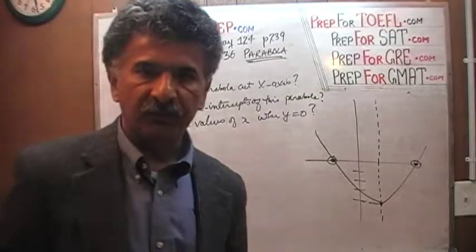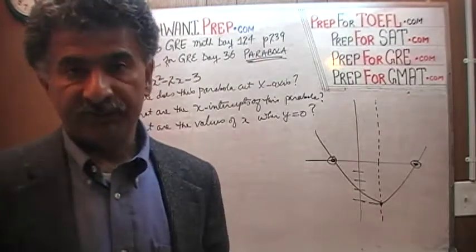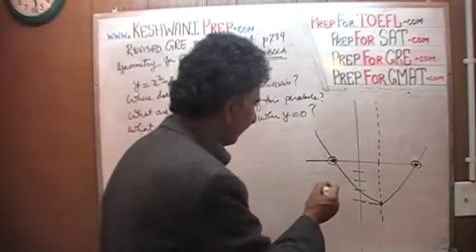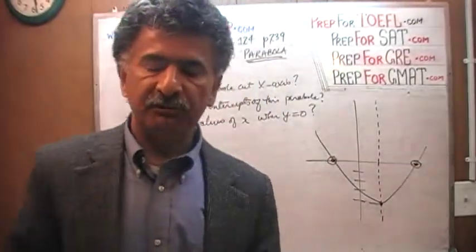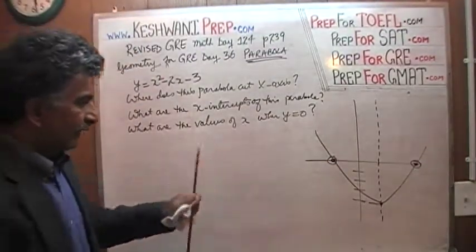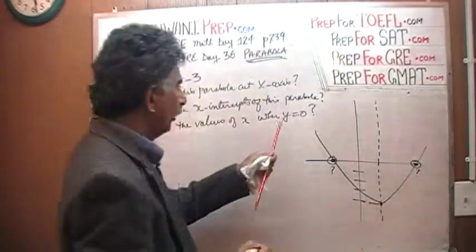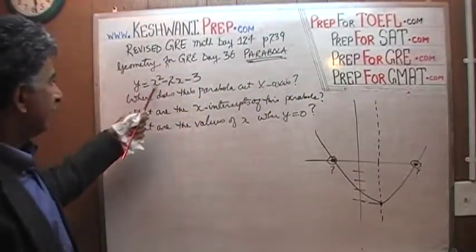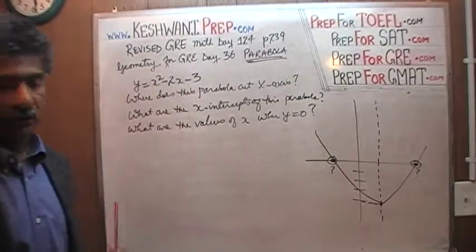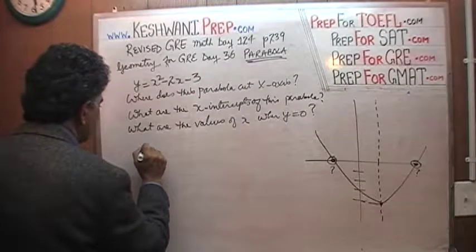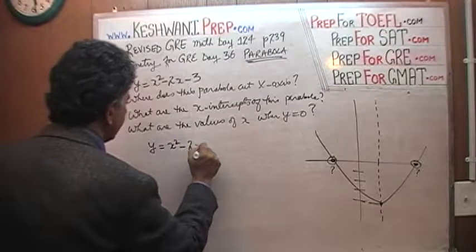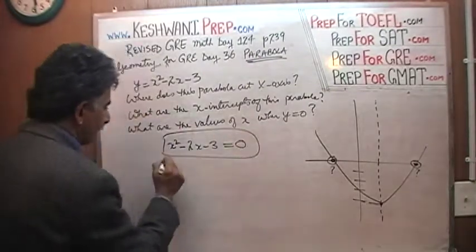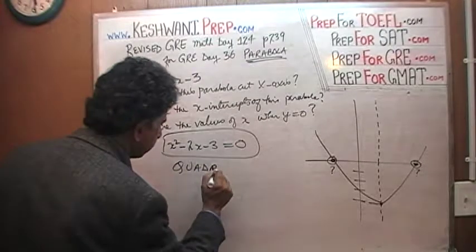Where it cuts the x-axis is what is called the x-intercept, or intercepts. In this case, we have two of them. It cuts the x-axis here and there — which is also the same as asking: what are the values of x when y equals 0? Because at those points, y is 0. So we're going to set y equals x squared minus 2x minus 3 equal to 0, and solve for x. This equation is what is known as a quadratic equation.